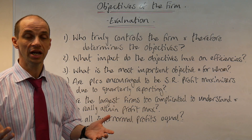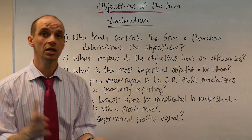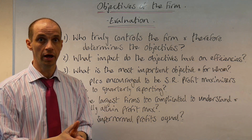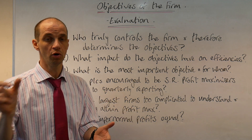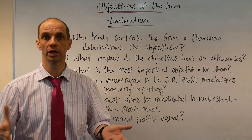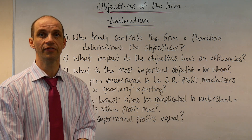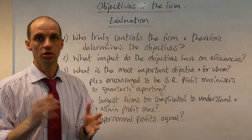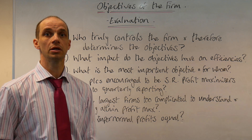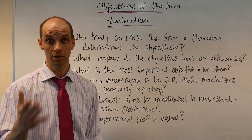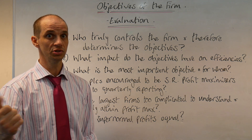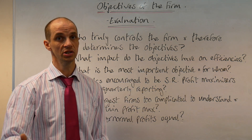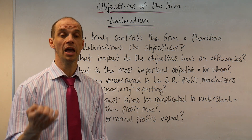Secondly, what impact do the objectives actually have on efficiencies? We've seen that profit maximization potentially allows for the pursuit of dynamic efficiency — using those profits to really improve the business offering in the future and improve customer satisfaction in the future. You could certainly consider the actual increase in consumer surplus and producer surplus that may be apparent in pursuing those other objectives.